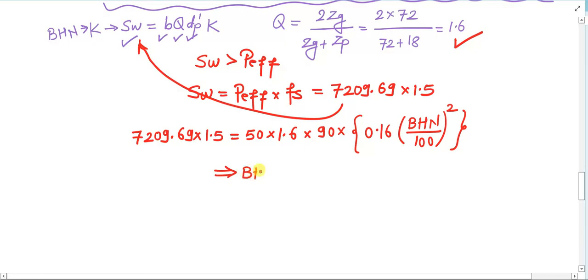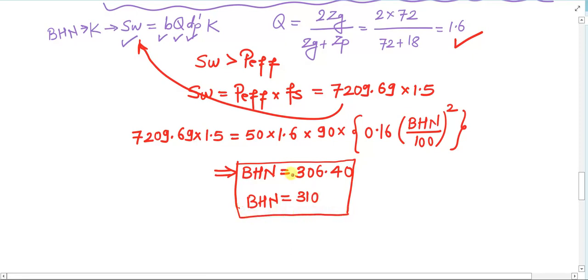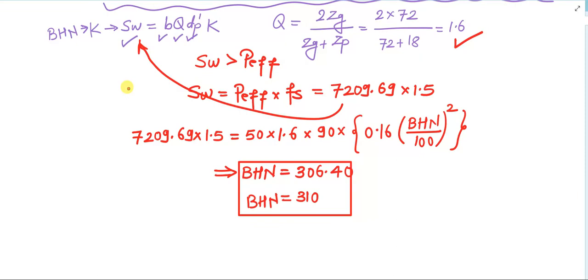So the final answer for surface hardness is BHN = 310. You have successfully applied the philosophy of beam strength and wear strength to calculate various gear parameters such as module, face width, pitch circle diameters, factor of safety, pitch line velocity, velocity factor, and surface hardness. This was the basic numerical for gear design — more numericals will be solved in upcoming sessions.